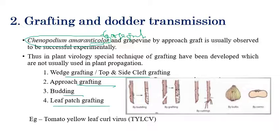Through grafting, tomato yellow leaf curl virus can be transmitted by means of grafting material. Grafting transmission is one of the important methods used to study and identify plant viruses in laboratory conditions.